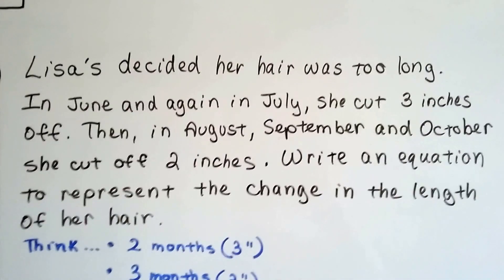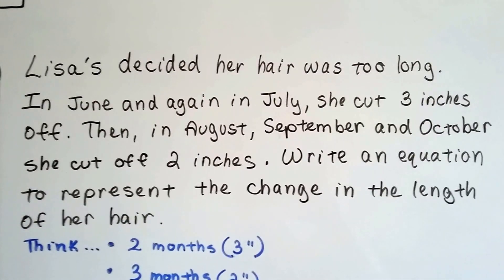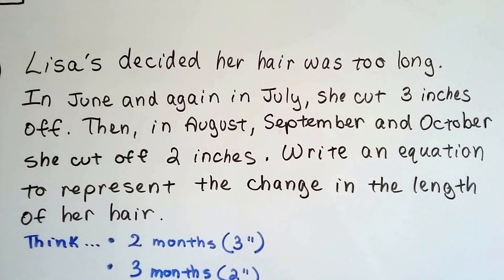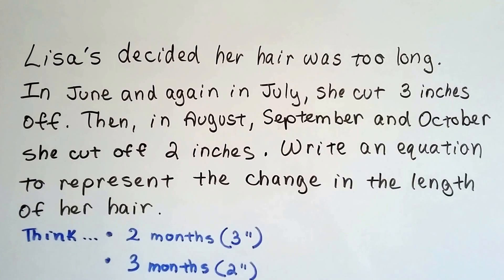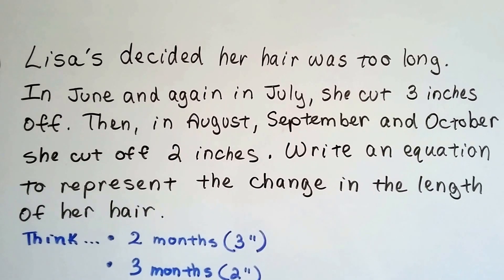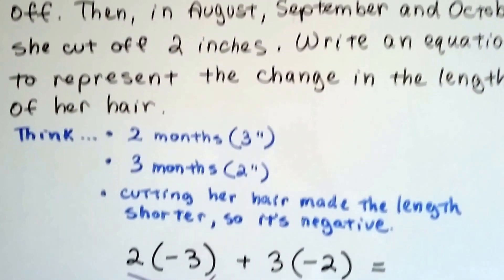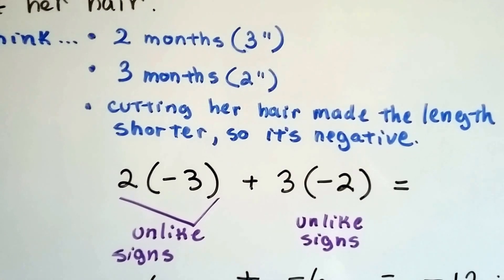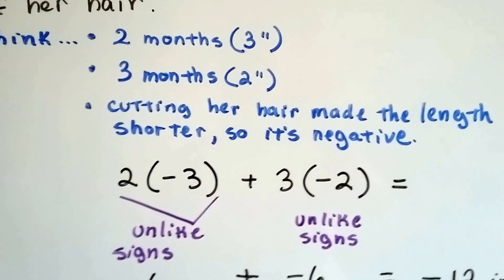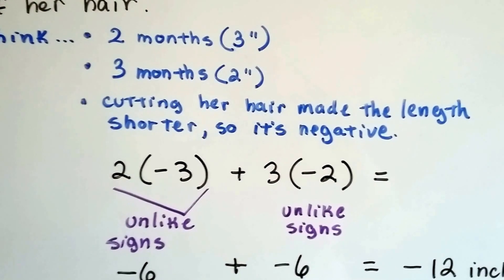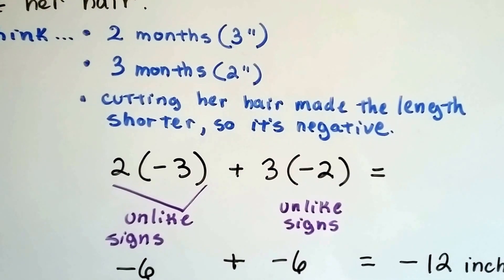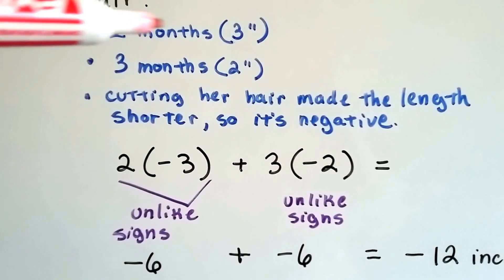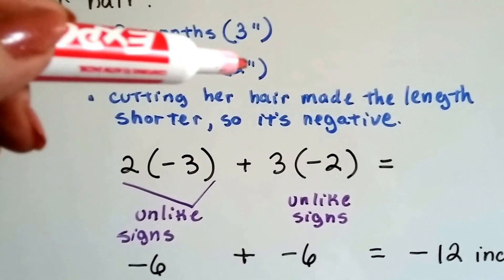Let's try another one. Lisa decided her hair was too long. In June and again in July, she cut three inches off. Then in August, September, and October, she cut off two inches. Write an equation to represent the change in the length of her hair. So for two months she cut three inches, and for three months she cut two inches. Cutting her hair made the length shorter, so it's a negative from what it was. We've got two times negative three, and three times negative two.